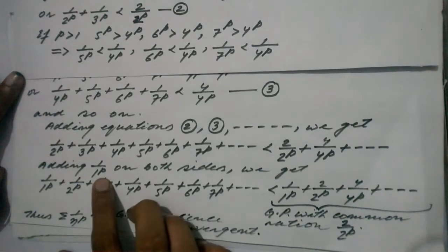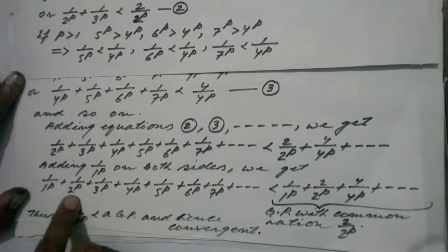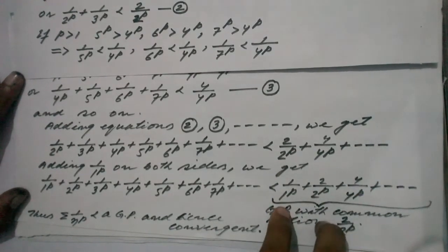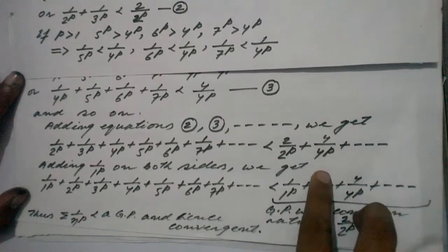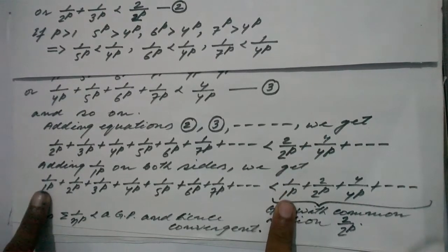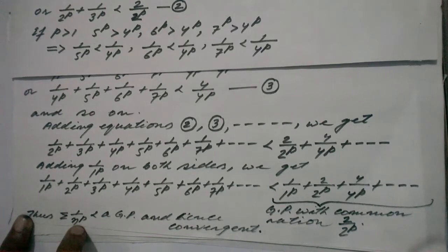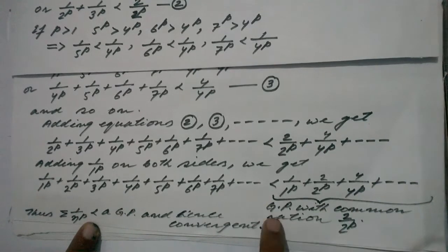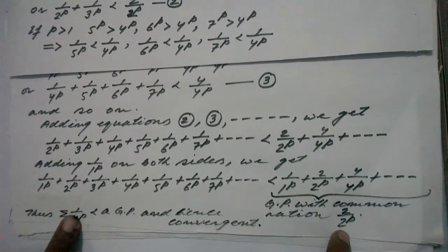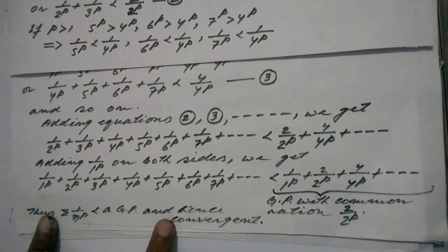Adding 1/1^p on both sides of this inequality, the left side becomes sigma 1/n^p. The right side is 1 + 2/2^p + 4/4^p + ..., which is a geometric series (GP) with common ratio 2/2^p. Since a convergent GP bounds sigma 1/n^p from above, sigma 1/n^p is convergent when p > 1.